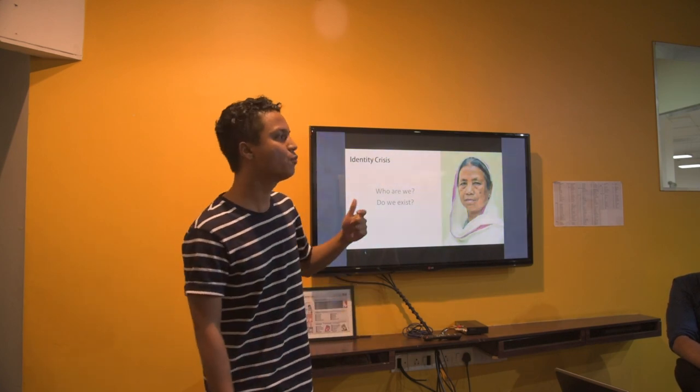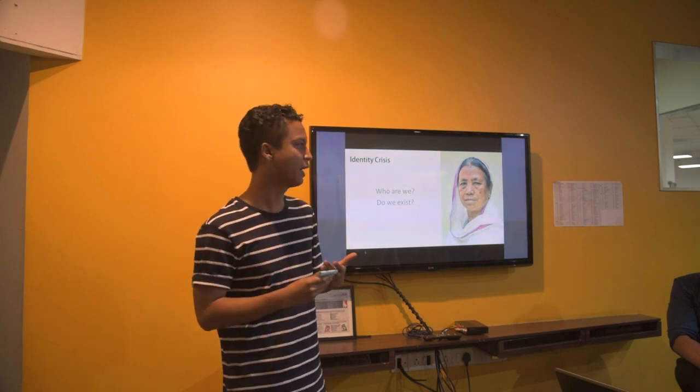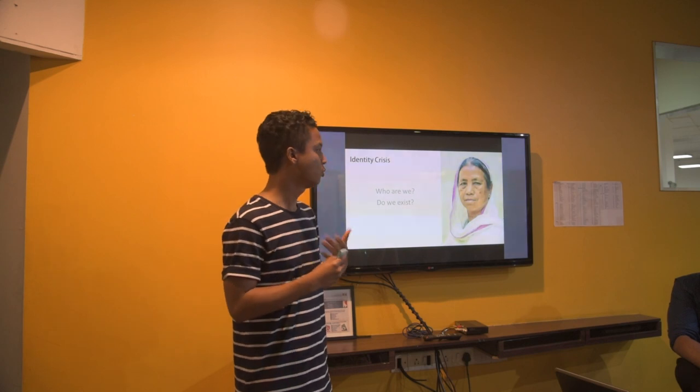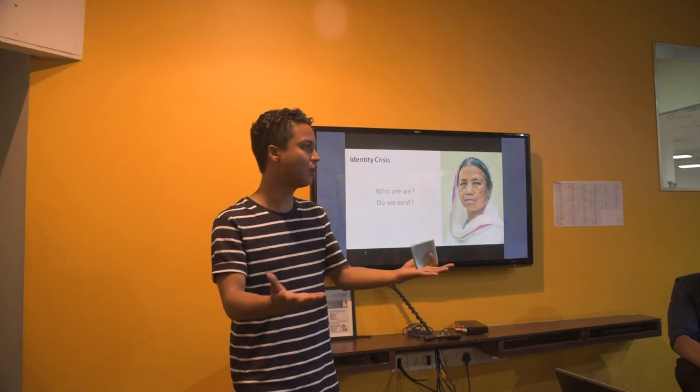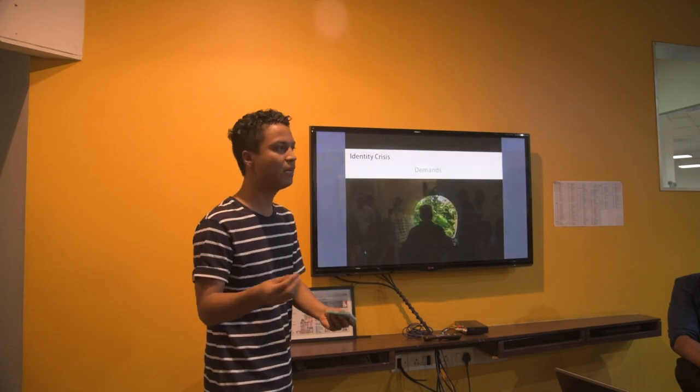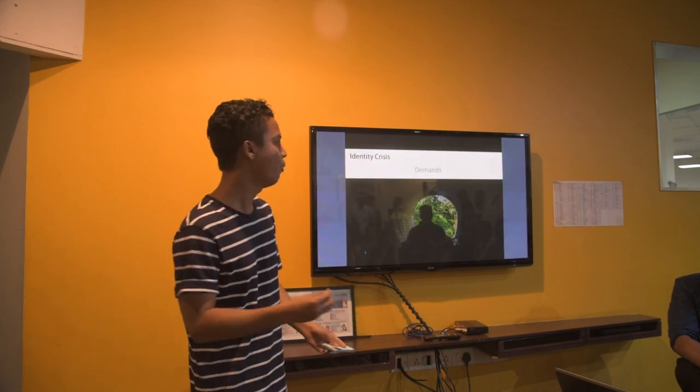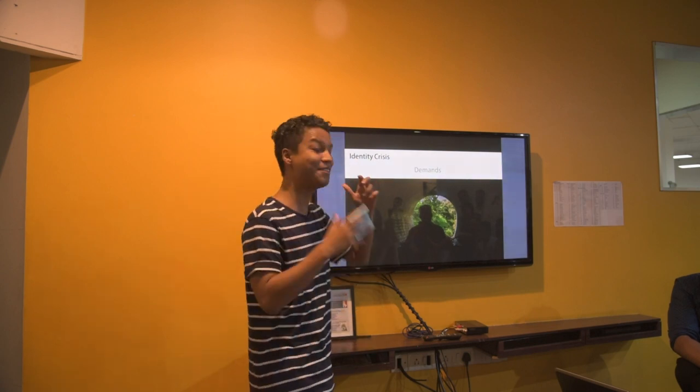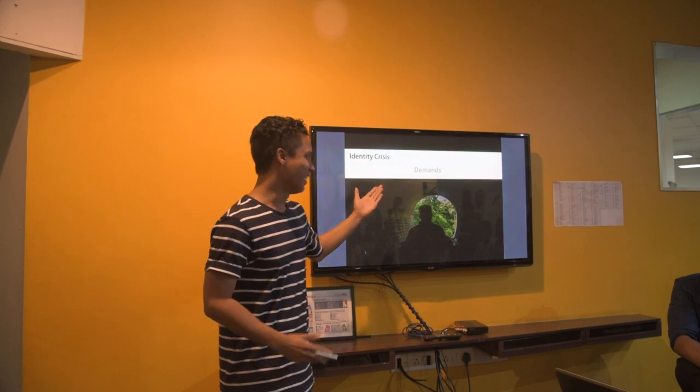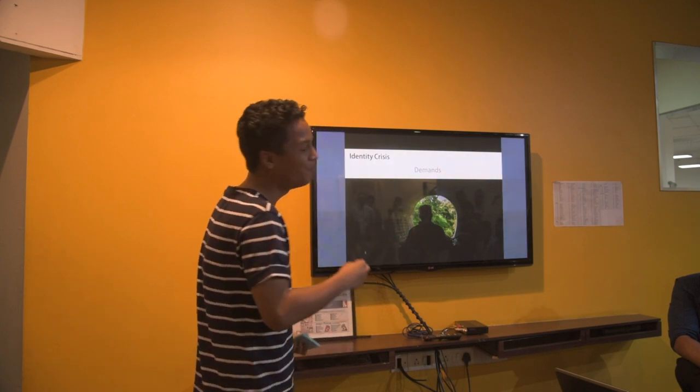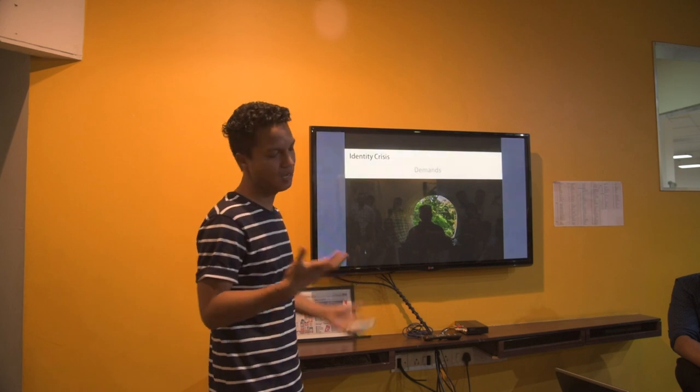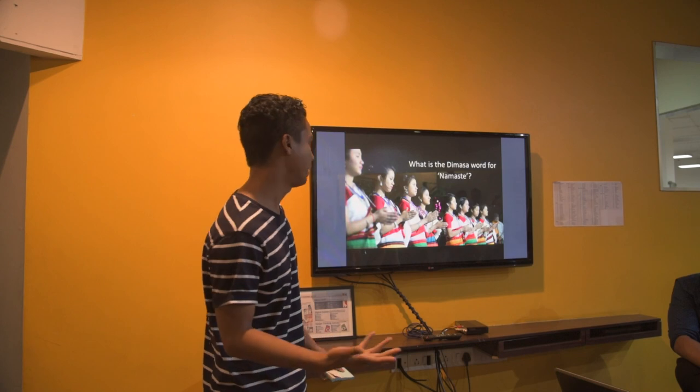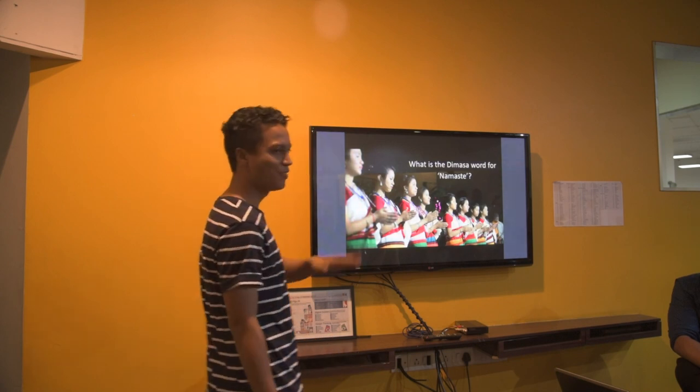So who are we? Do we even exist? Because we have to share our land with a lot of other tribes, there is always a fight for supremacy as to whose land do we live in. So when I have to go out of the Northeast, I have to explain why am I not speaking in Assamese? Why am I still in Assam? Because of this, militancy started because they wanted their own state so that they can have their own limelight.